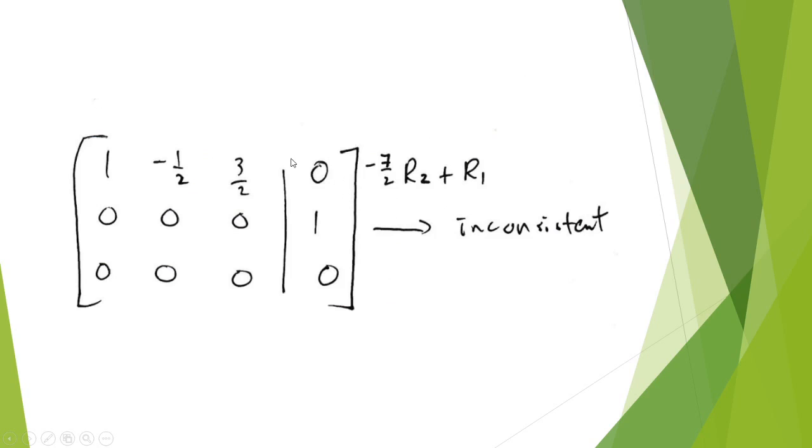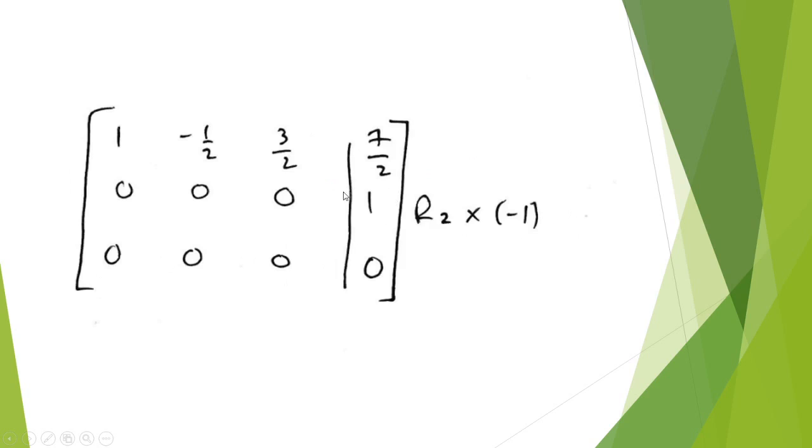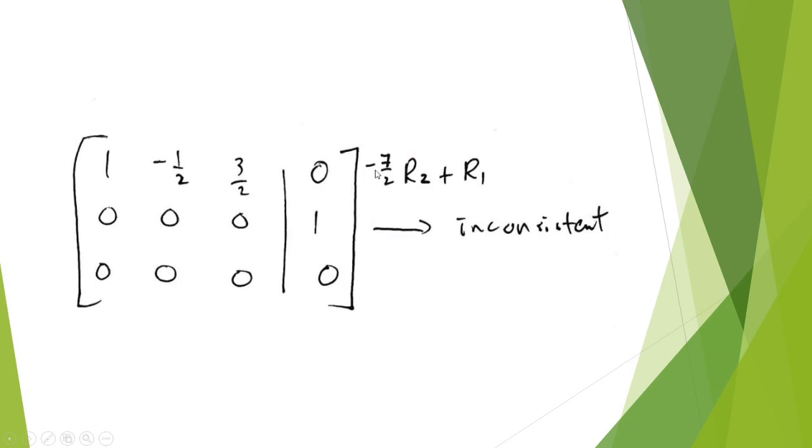you want to eliminate this term. So what we did, we multiplied this 1 by negative 7 over 2, so all of row 2 is multiplied by negative 7 over 2 and added to row 1. But negative 7 over 2 times 0 is 0, so it doesn't affect the other terms. The only term it's going to affect is this one, and the one we were trying to eliminate.